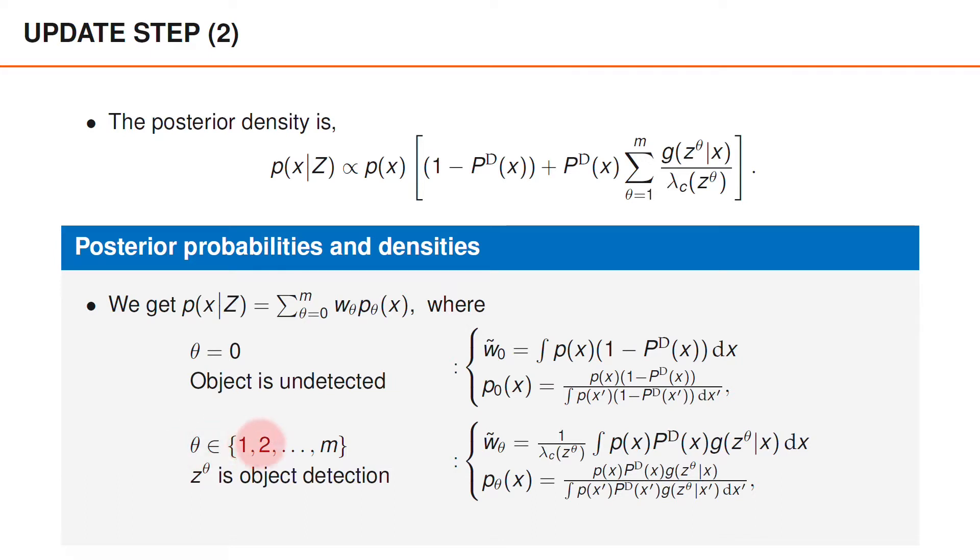Similarly, for the hypothesis where θ is greater than 0, which means that the object is detected, the original functions are p(x) times P^D(x) times g(z_θ|x) divided by λ_c(z_θ).